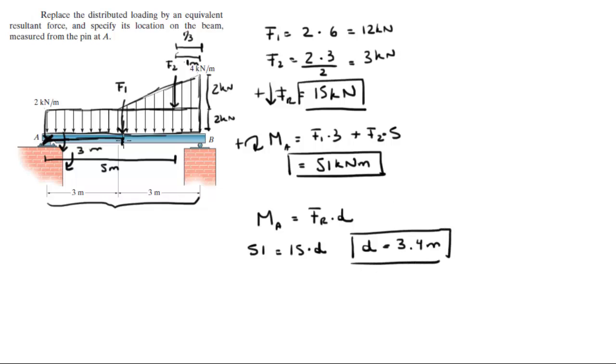3.4 meters to the right of A, somewhere around here is D. That distance will be where the resultant force would act. Final answer for D, final answer for the moment, final answer for the resultant force F1 and F2.